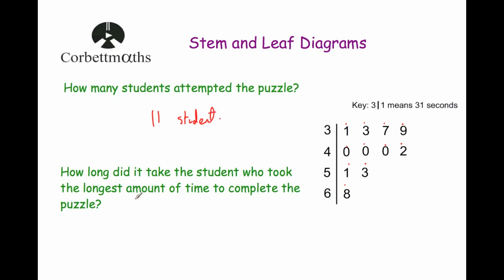The next question: how long did it take the student who took the longest amount of time to complete the puzzle? We're looking for the greatest time, so the biggest number. The biggest number in this Stem and Leaf diagram is 68 seconds. If it asked us for the student who took the shortest amount of time, it would be 31 seconds.